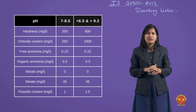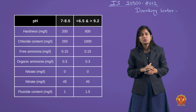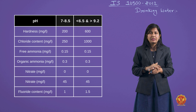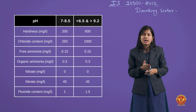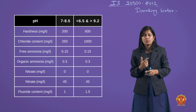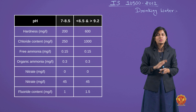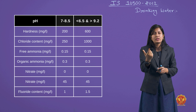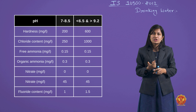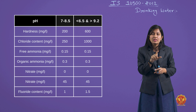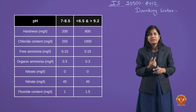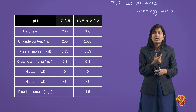pH का permissible range 7 to 8.5 है। Less than 6.5 और more than 9.5 cause for rejection है। Hardness की permissible limit 200 mg/L, cause for rejection 600 mg/L — 600 mg/L से ऊपर हो जाए तो water reject कर देंगे। Chloride content की permissible limit 250 mg/L है, cause for rejection 1000 mg/L। Competitive exam में ये one-liner questions पूछे जाते हैं — chloride की permissible limit 250 mg/L याद रखें।